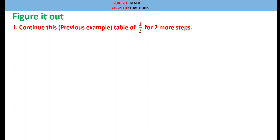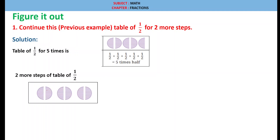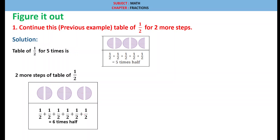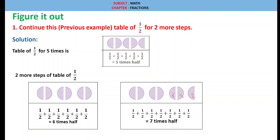Figure it out, question 1: continue the previous example table of one half for 2 more steps. We observed the table of 1 by 2 for 5 times. So 2 more steps: 1/2 repeated 6 times — that is 6 times half. Next, 1/2 repeated 7 times — 1/2 + 1/2 + 1/2 + 1/2 + 1/2 + 1/2 + 1/2 — nothing but 7 times half.